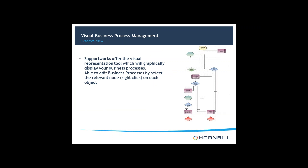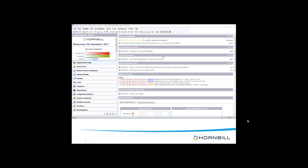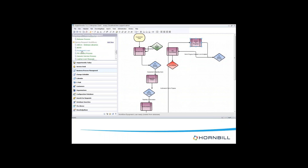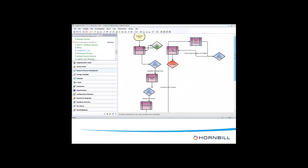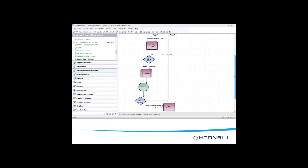SupportWorks offers a visual representation tool which graphically displays your business process. You're able to edit business processes by selecting the relevant node - you can right-click each node and edit those within the visual business process tool. Some people prefer this visual editor; personally I prefer to edit using the process settings, but if you're a visual person you can use this tool. I'll demonstrate the business process in relation to a service request. In the Business Process Management module you can see the Equipment Loan process shown graphically, and from here you can see the workflow is in the correct order. Any broken nodes or orphan stages will also be displayed here.